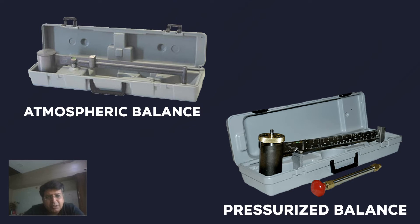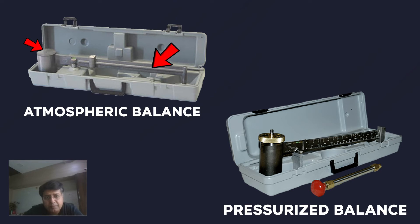The atmospheric mud balance is the one we use on the tank. We have a cup, we fill it with mud, place a cap on it, and then balance it using the counterweight. It gives you the atmospheric weight of the mud. This is generally used when you want to measure the mud and there is no problem of air bubbles or dissolved gas.